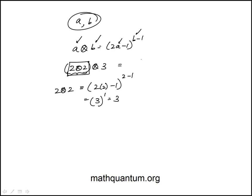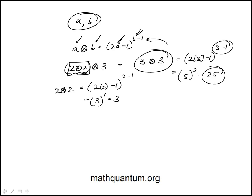Now we replace this with 3, which would be equivalent to 3 cross 3. We apply the rule again where now a is 3 and b is 3. So this would be 2 times 3 minus 1 to the power of 3 minus 1. This is 2 times 3 is 6, 6 minus 1 is 5, and that's to the power of 2. 5 squared is 25, which is the answer.